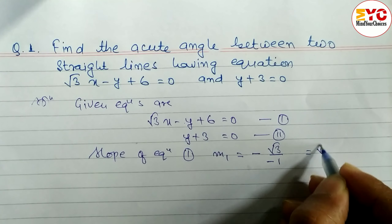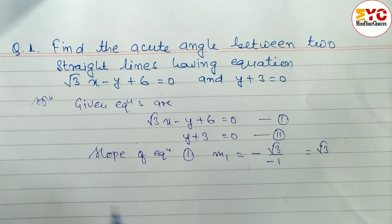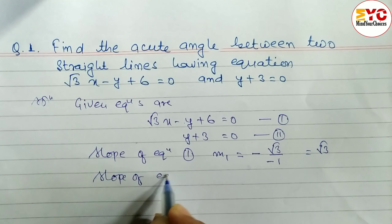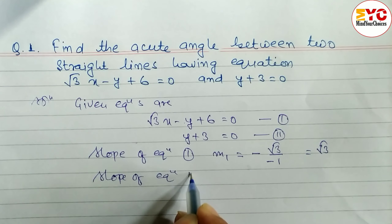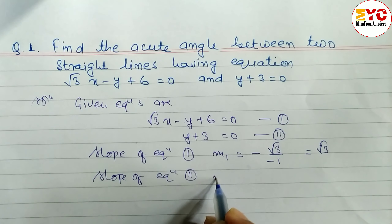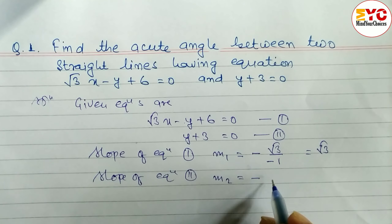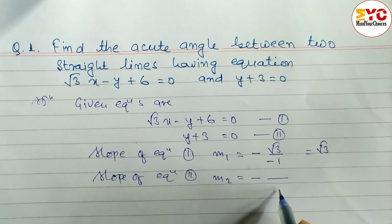So m1 is equal to root 3. Similarly we have to find out the slope of equation 2: m2 is equal to minus coefficient of x divided by coefficient of y.